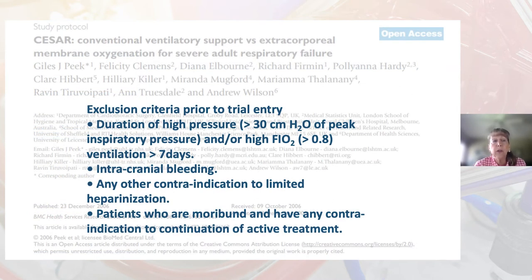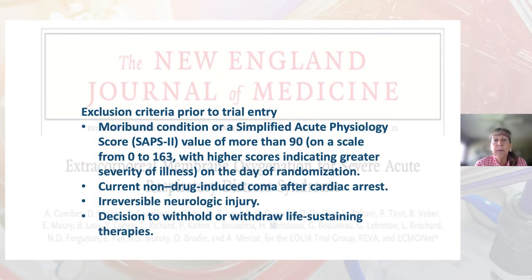In the CESAR trial, the exclusion criteria prior to entry included mechanical ventilation greater than seven days, intracranial bleeding, or any contraindication to limited heparinization. So no neuro patient was involved. The same applied in the EOLIA trial, excluding patients in moribund condition according to a SAPS-2 score, current non-drug-induced coma after cardiac arrest, irreversible neurologic injury, and decisions to withhold or withdraw life-sustaining therapies. All these patients were not included.